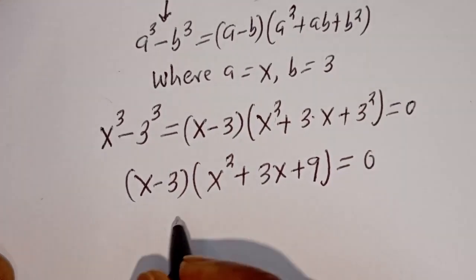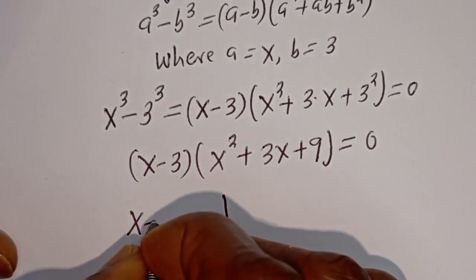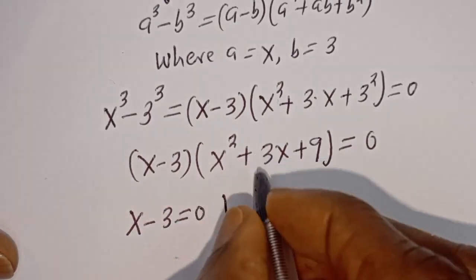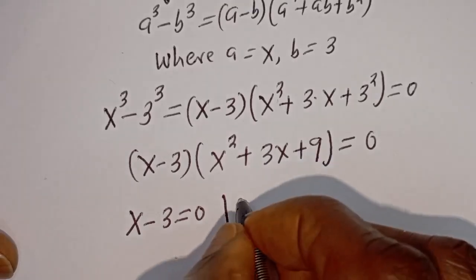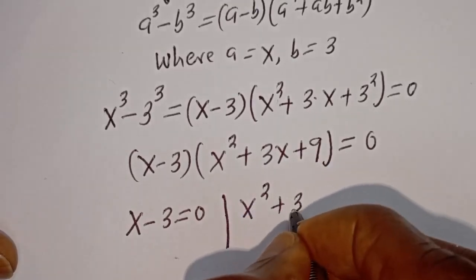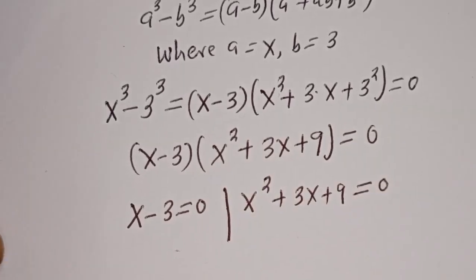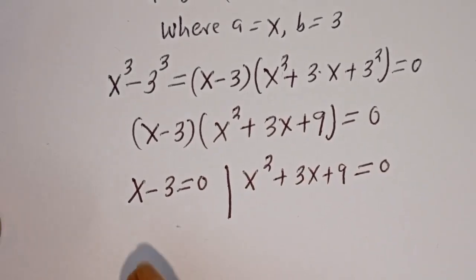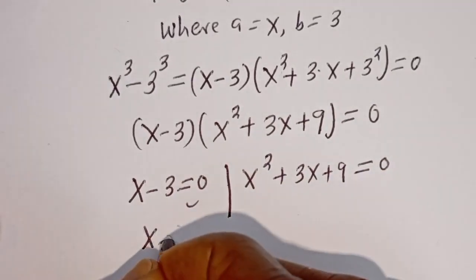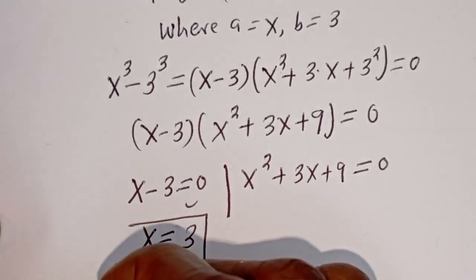There are two cases here. The first case is s minus 3 is equal to 0, and the second case is s squared plus 3s plus 9 is equal to 0. From the first case, s is equal to 3. This is the first value of s.